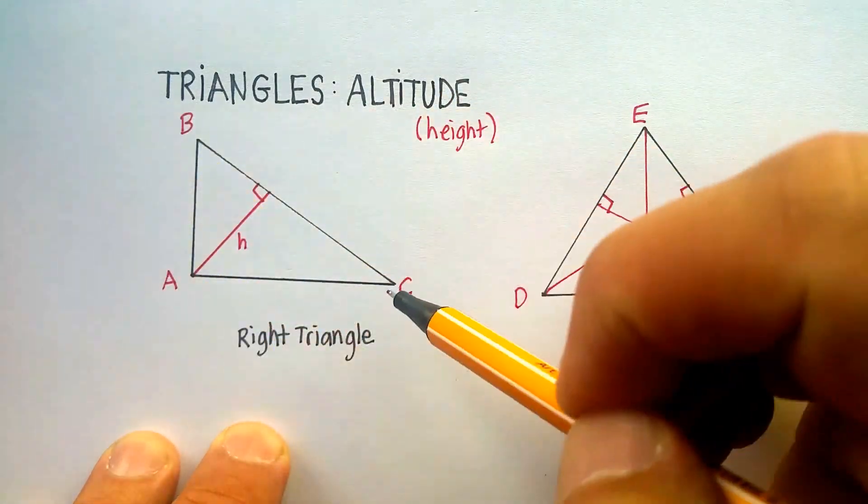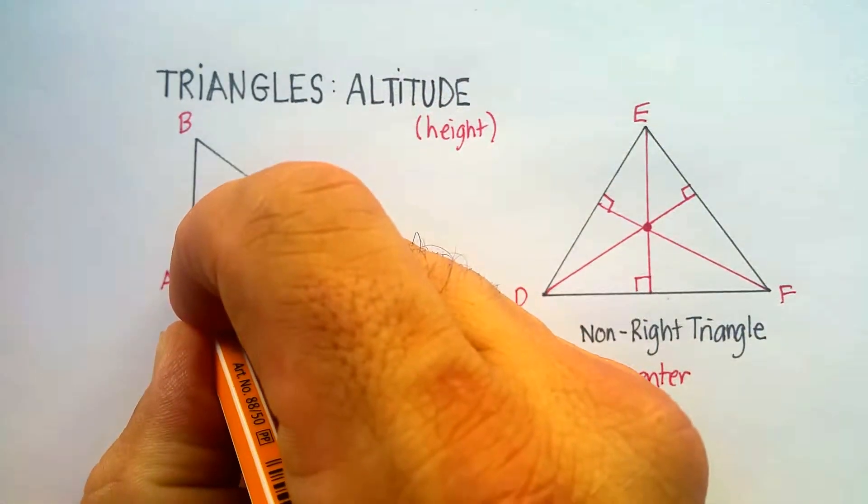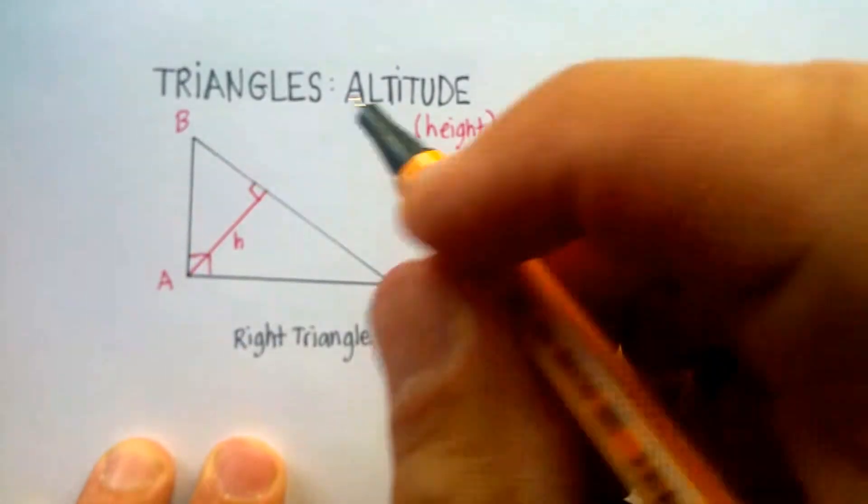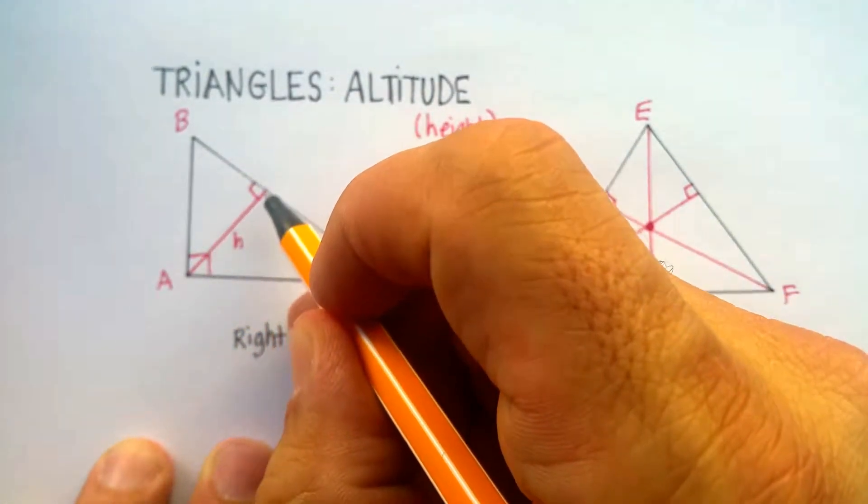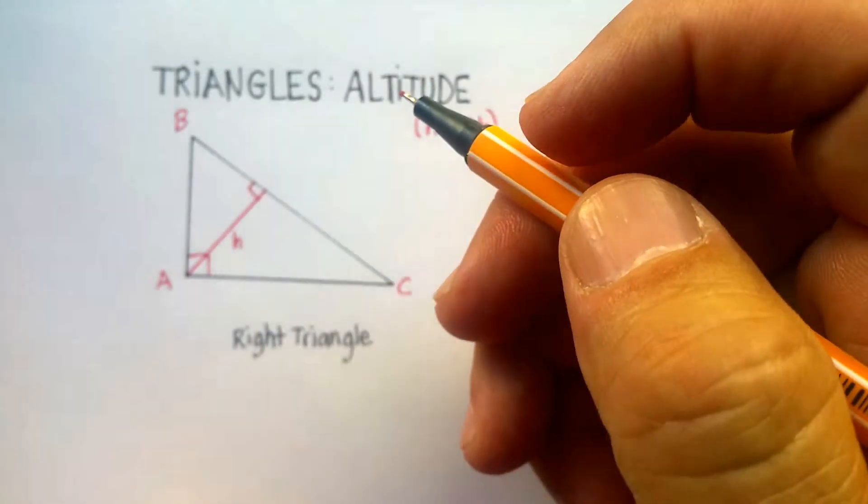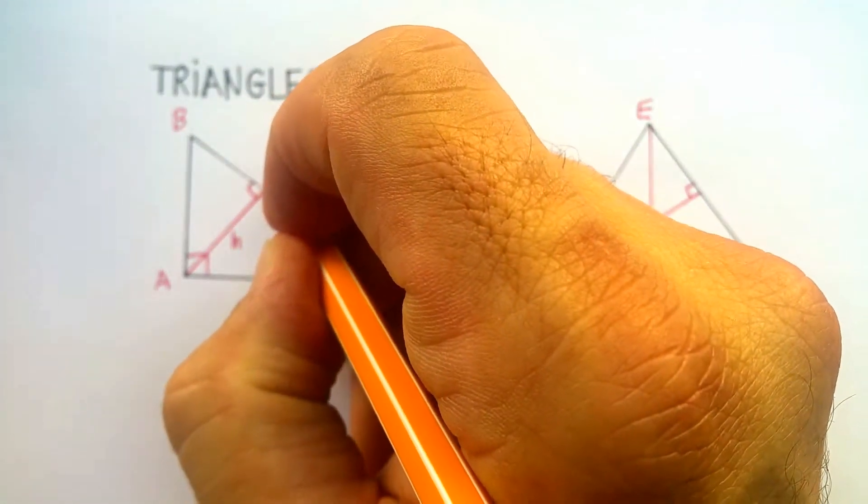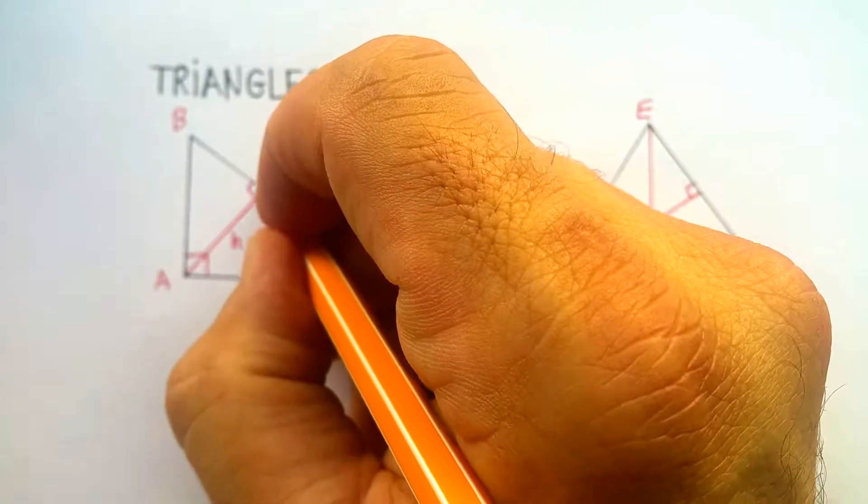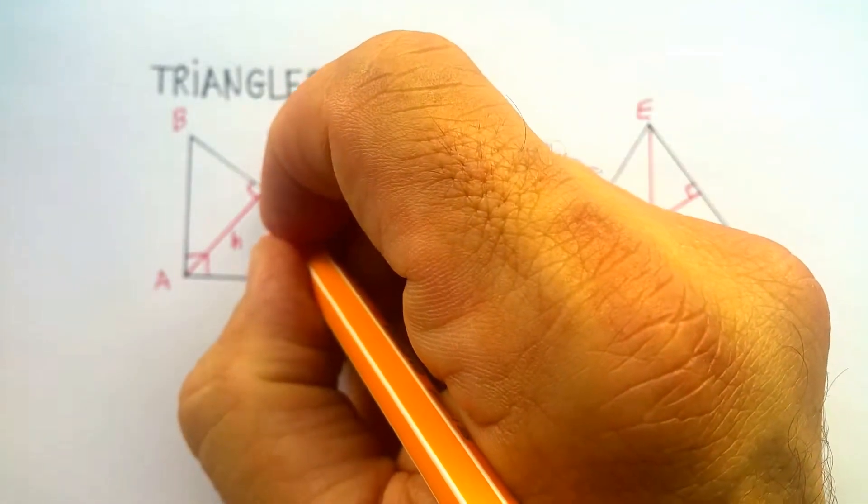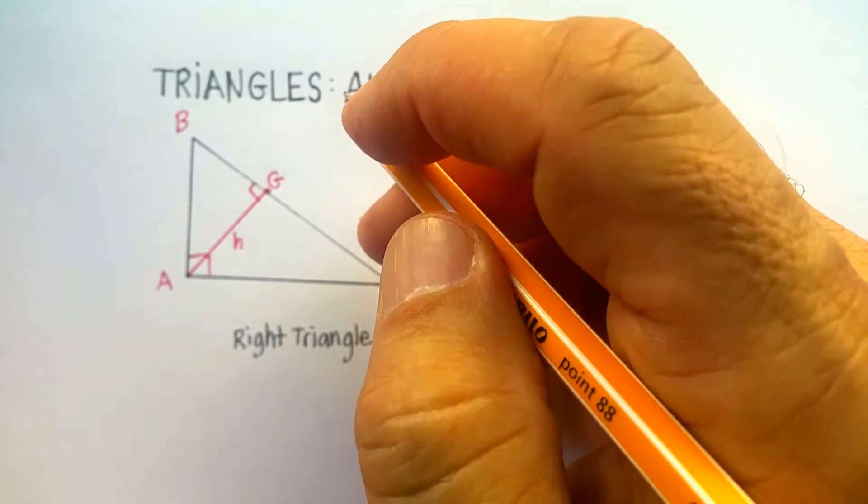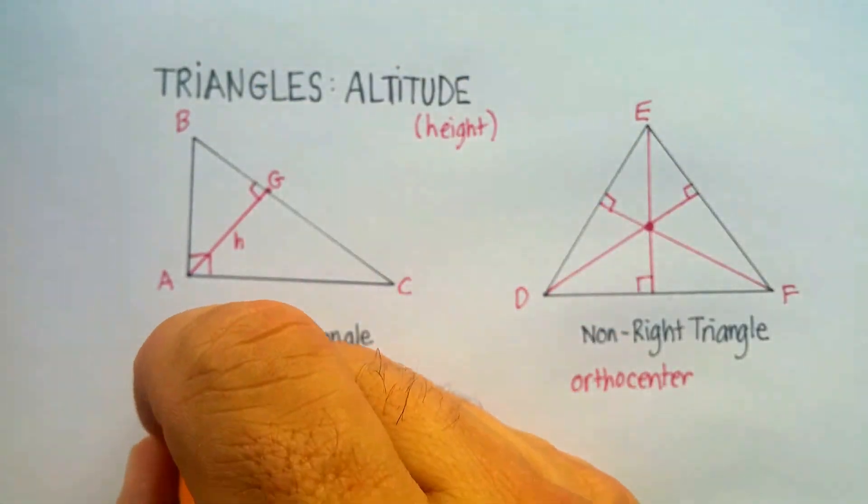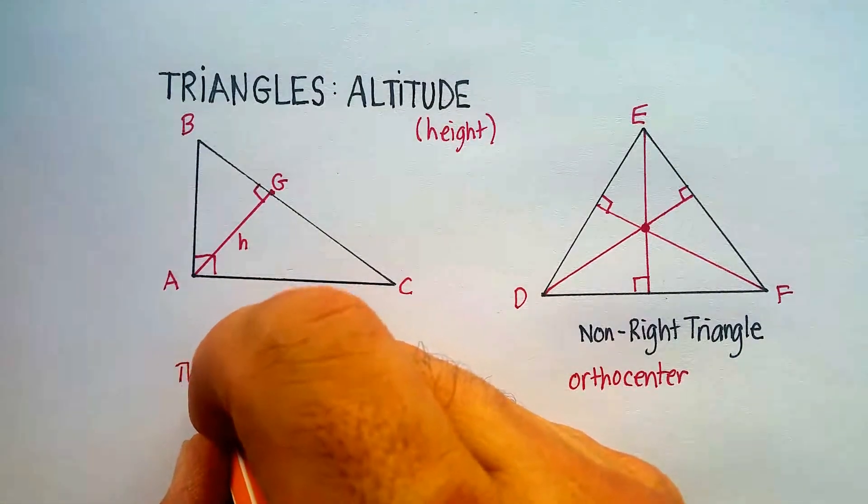Now, I'm distinguishing a non-right triangle from a right triangle, and I'll show you why. If you have a right triangle to begin with, so this is a 90-degree angle right here. And I go from the 90-degree angle, and I drop a line straight through and create another perpendicular. And I'm going to call this point G.